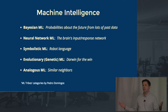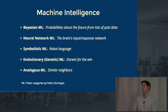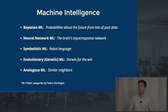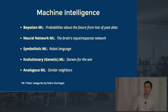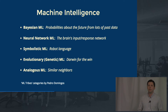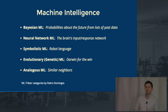Machine intelligence is my terminology for the same thing everybody calls machine learning or artificial intelligence — people call it by different names. These five categories, the so-called five tribes, are from Pedro Domingos, a great machine learning professor at the University of Washington. The tribe that we're going to talk about today is Bayesian, which is really just probabilities — an easy way to think about it.